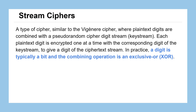With stream ciphers on computers, plain text digits are encrypted one at a time with a corresponding digit from our key stream. That random digit is actually a binary digit — just a zero or a one — and instead of adding and modding by 26 like with Vigenère, our combining operation is the exclusive OR, or XOR, operation.